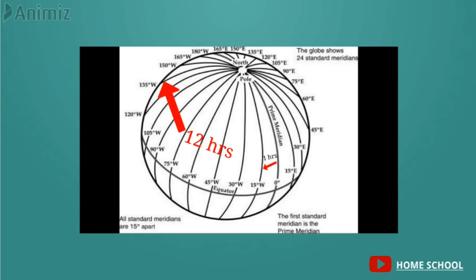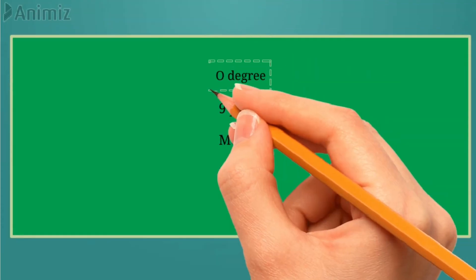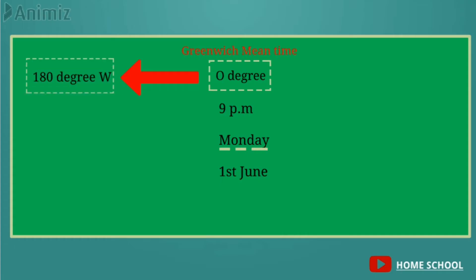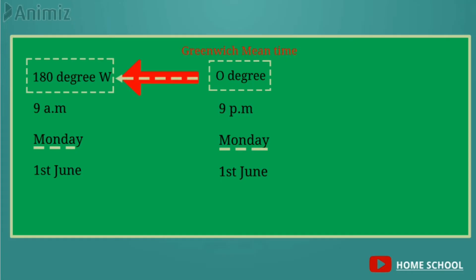Suppose the time at zero degree is 9 pm and the day is Monday, 1st June. If we go behind Greenwich Mean Time, at 180 degree west the time will be 9 am and the day will still be Monday, 1st June. So we have moved back by 12 hours.